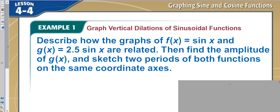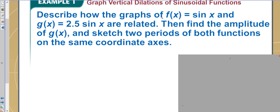So now let's say we're looking at a problem. It says describe how the graphs of f(x) equals sine x and g(x) equals 2.5 sine x are related. So it's basically asking a transformation problem. The only thing different is this right here, and that is in the place of A. That means this has an amplitude of 2.5.